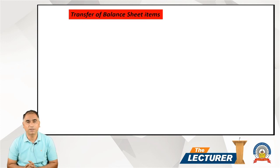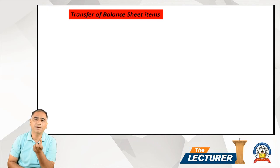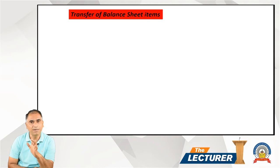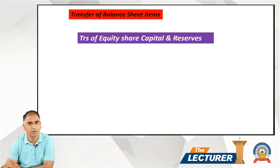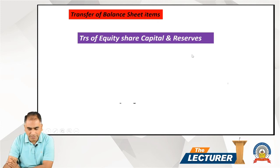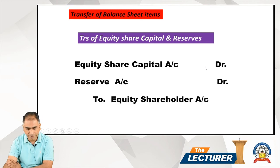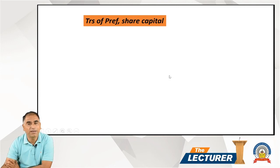Next, we discuss accounting treatment in the books of the purchasing company. As I told you, in the entire chapter we need to be comfortable with only two things. In a selling company, there are nine steps and nine journal entries. In the purchasing company, whenever one company acquires another, three basic journal entries are always required: (1) PC due, (2) Incorporation of assets and liabilities, (3) PC discharge. But before passing these entries, we need one calculation - goodwill or capital reserve.